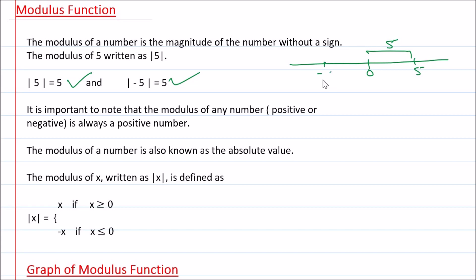Same way, if I talk about minus 5 — from 0, how many units away is it? It is 5 units. So in both cases, we have got positive 5. Modulus of a number does not contain any negative sign; it will always be a positive number. It is important to note that the Modulus of any number, positive or negative, is always a positive number. In other words, Modulus is a function which converts any type of number, whether positive or negative, to a positive number — it removes the minus sign.